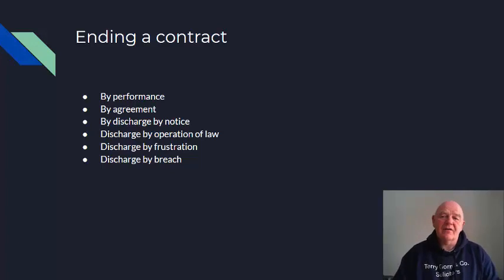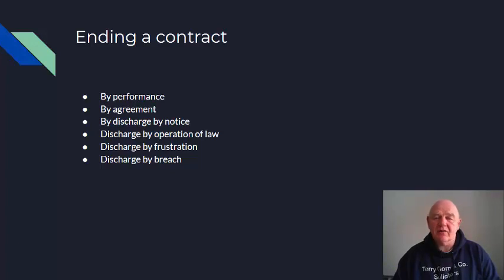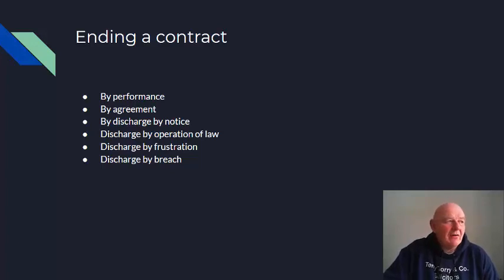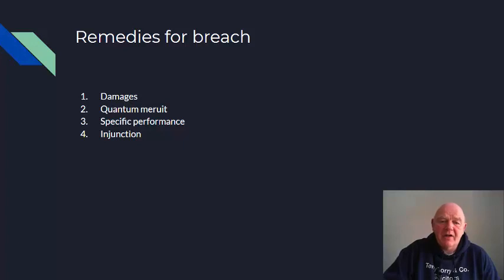A contract can be discharged by frustration. For example, a sales rep who needs their car as a fundamental part of their duties, if they lose their licence through drink driving, the contract will be at an end through frustration because they are unable to fulfil their duties. Likewise, if an employee is so ill as to be unable to perform the work for which they were employed, that contract will eventually be ended by frustration. A contract can also be ended by breach.